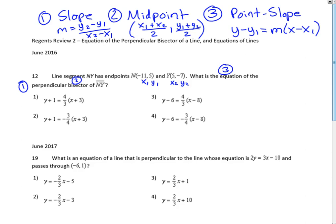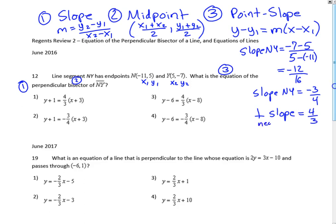Label our points (x1, y1) and let's get the slope of NY. It's y2 minus y1 over x2 minus x1. Always put that second number in parentheses, especially if negative. So we've got -7 - (5) over 5 - (-11), which is -12/16. That simplifies to -3/4. The perpendicular slope is the negative reciprocal, so that would be 4/3. That's step one.